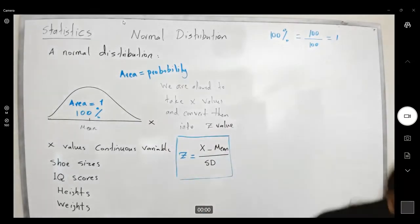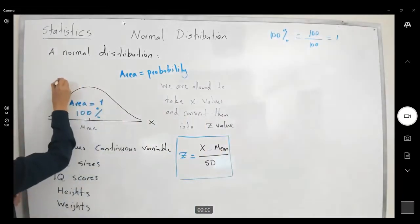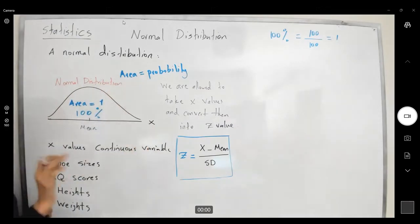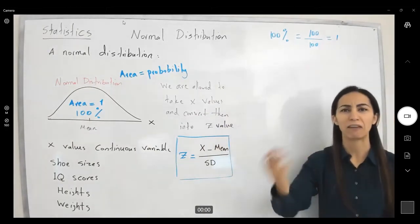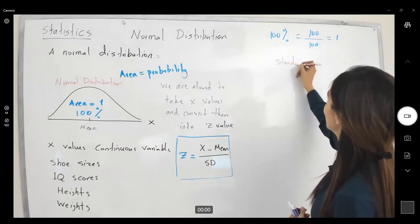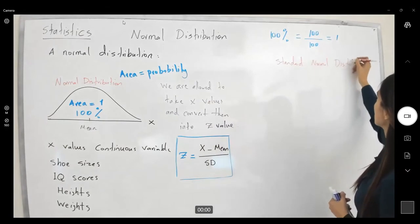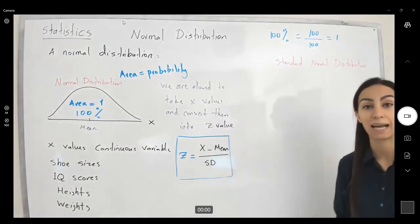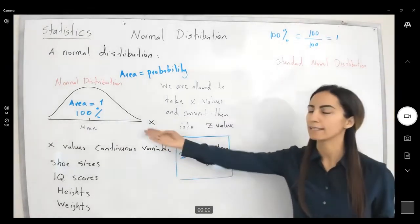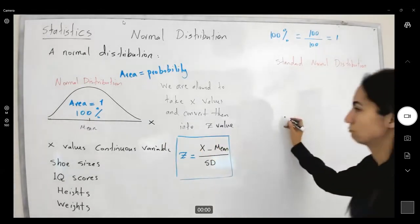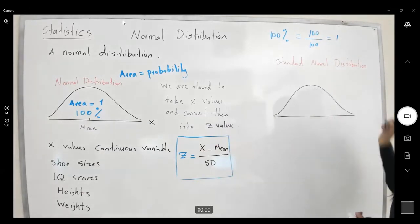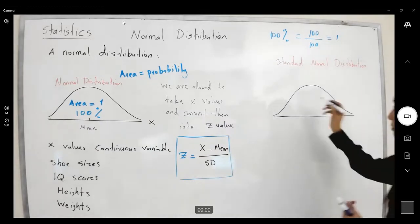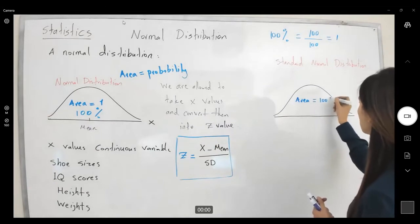We're going to convert the normal distribution — with its x values — into the standard normal distribution with z values. This new distribution has the exact same bell shape, and the area below it is still 100% or 1. When using standard normal, the horizontal axis is labeled with z values instead of x values.